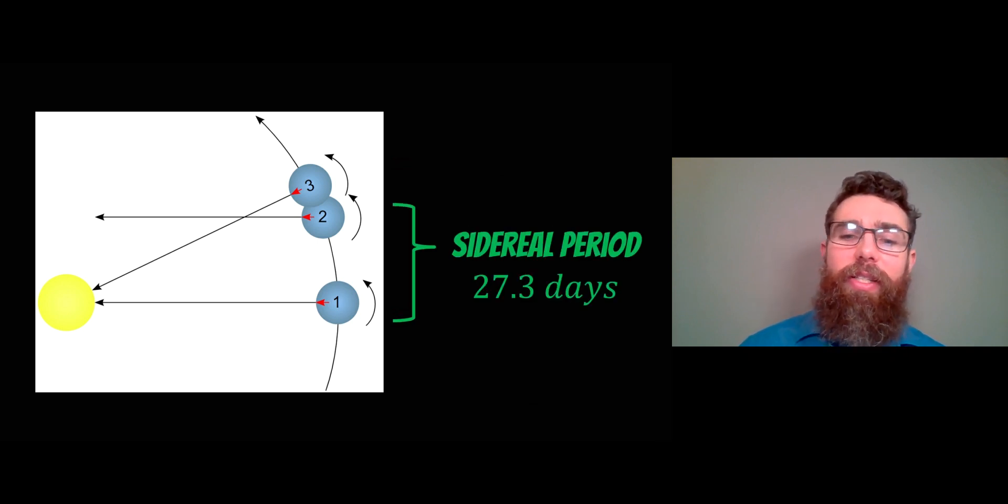Now, the sidereal period is 27.3 days, and that is one 360 degree orbit around the Earth. We can note that with respect to the background stars. Instead of using the Sun and the lunar phase, we look at the position of the Moon relative to the background stars.